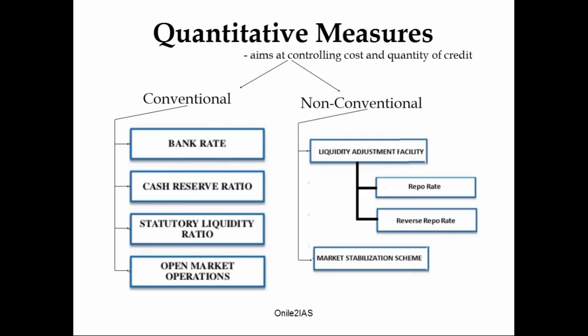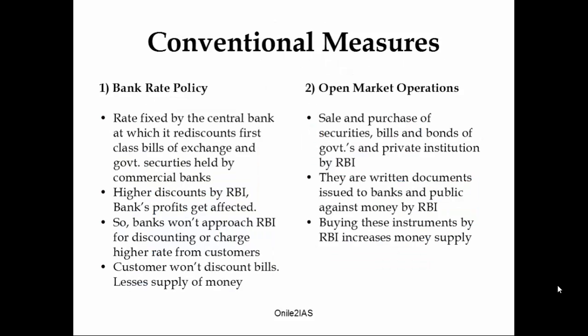Quantitative measures basically aim at controlling cost and quantity of credit. The amount of credit that directly flows into the economy is controlled by quantitative measures. It's subdivided into conventional and non-conventional measures. Under conventional: bank rate, cash reserve ratio, statutory liquidity ratio, and open market operations. Under non-conventional: liquidity adjustment facility, which is subdivided into repo rate and reverse repo rate. Note that all these measures are very important for prelims preparation. We also have market stabilization scheme.